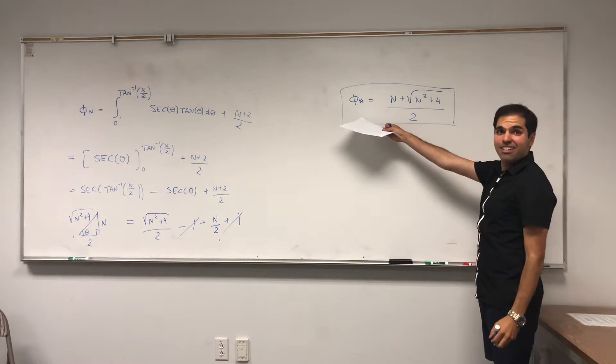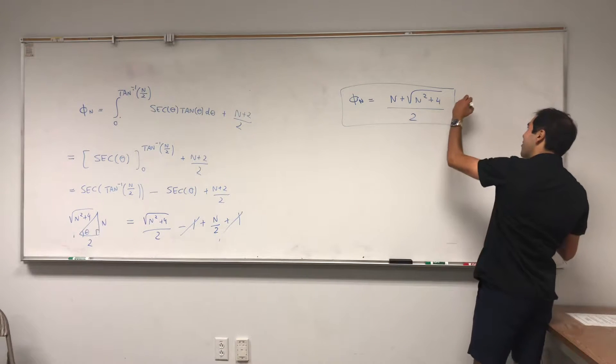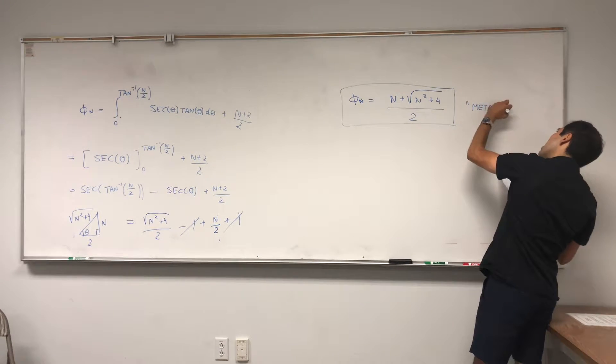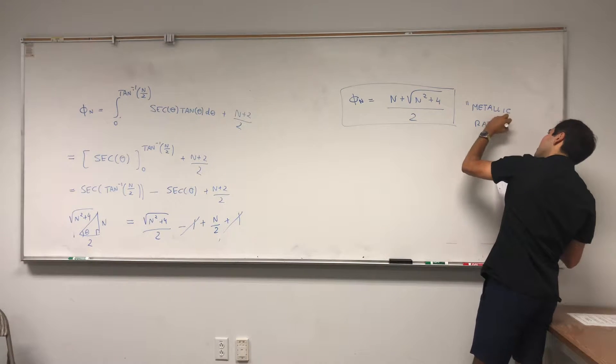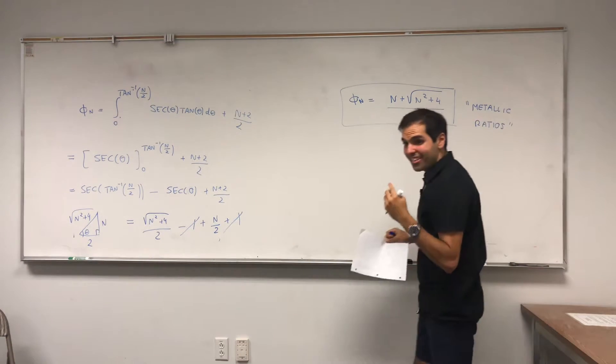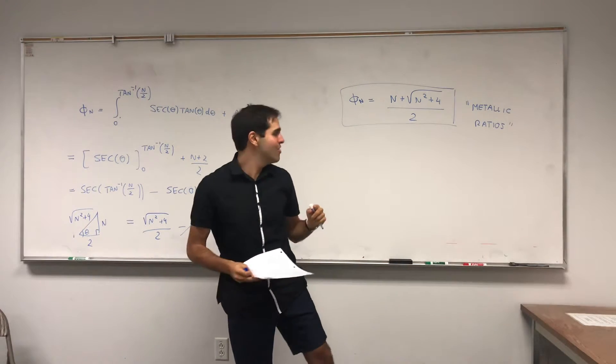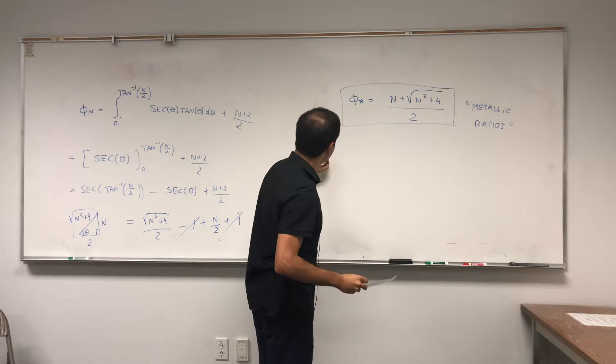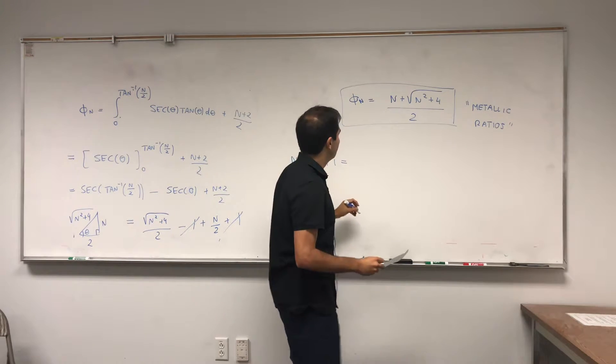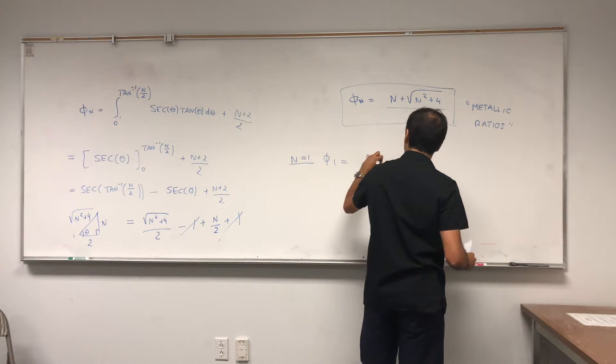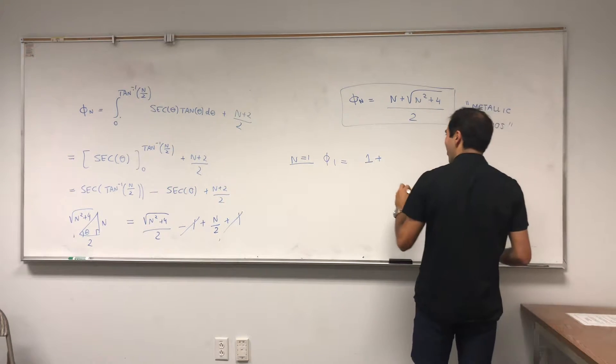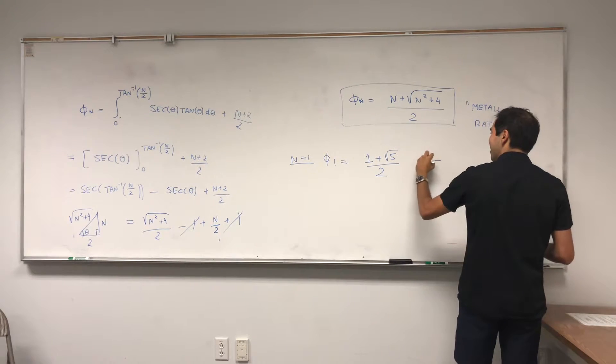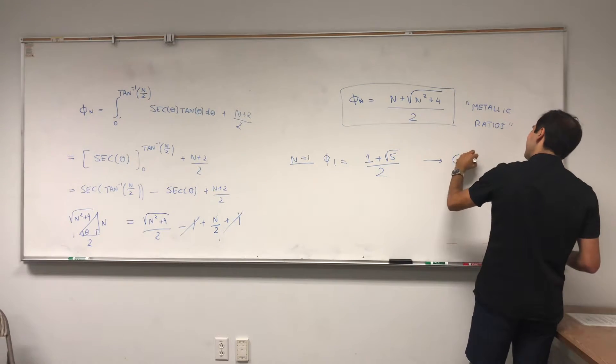And this family of numbers, those are what are called the metallic ratios. And I told you one of them is very familiar to you, because if you let n equals to 1, then phi 1 becomes 1 plus square root of 1 squared plus 4, which is square root of 5 over 2. And that's what's called the golden ratio.